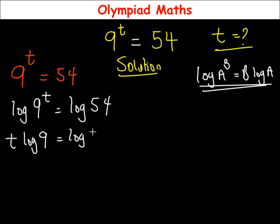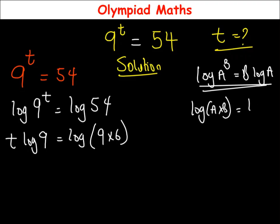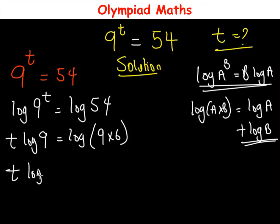Now 54 can be written as 9 times 6, which equals 54. At this junction, if you have log of a times b, this equals log of a plus log of b. So applying the same rule here, we have t·log 9 is equal to log 9 plus log 6.